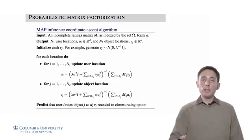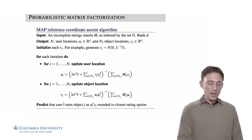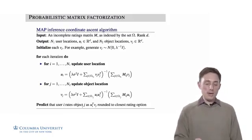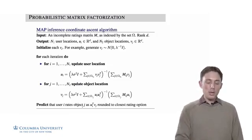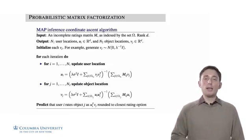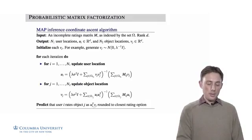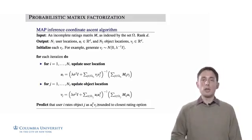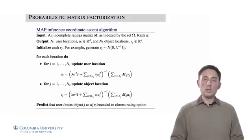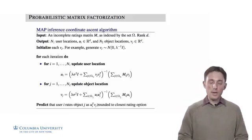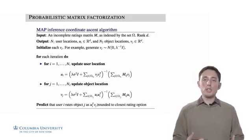When it's converged, if we want to make a prediction for a particular user I and a particular object J that we don't have in the matrix M, we'll predict the corresponding element in M to be the dot product between user I's location and object J's location. And then we can round it to the closest rating option. And that's how we're going to be able to make a prediction.